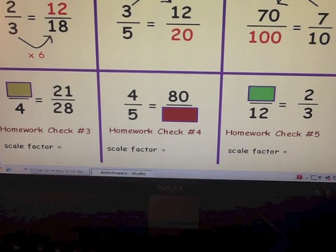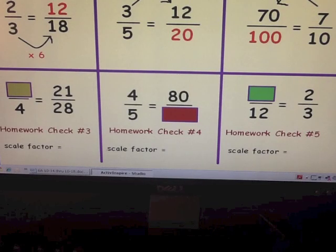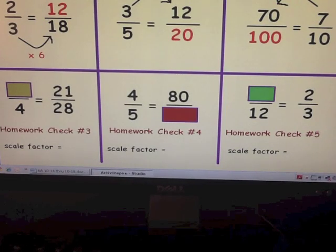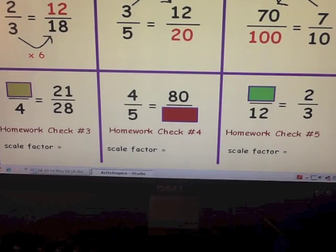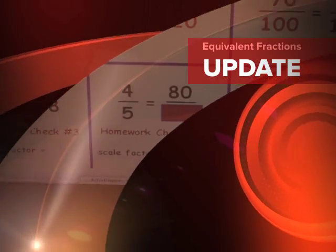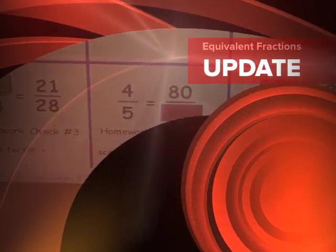These are your last three homework checks — number three, four, and five. Pause the video. First find the scale factor, then use it to find the missing numerator or denominator — the missing fractional value. Do homework checks three, four, and five on your paper. Once you're done, the video is done.